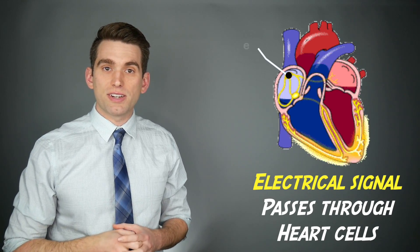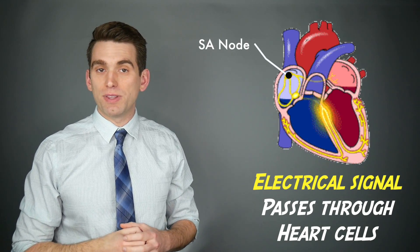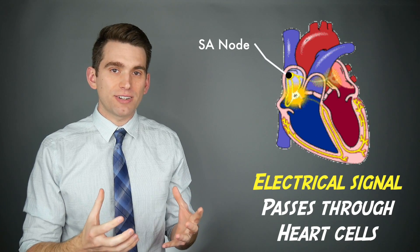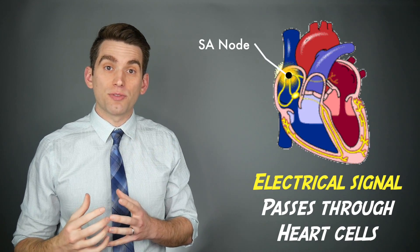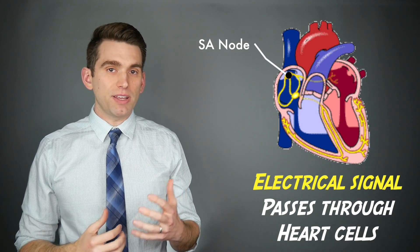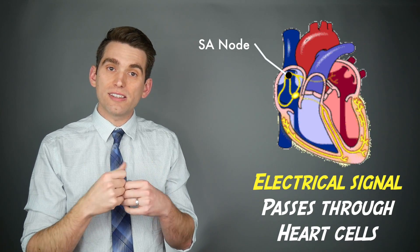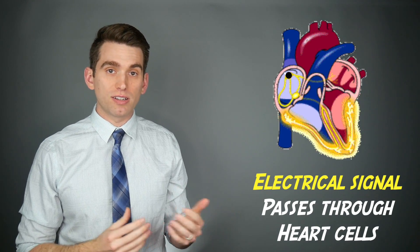The synchronized pumping of our heart relies on propagation of an electrical signal throughout the different regions of the heart. This signal originates in a spot called the SA node up in the right atrium and then generates an electrical signal that propagates down throughout the rest of the heart and stimulates those heart muscles to squeeze, allowing it to pump blood throughout our lungs and throughout the body.